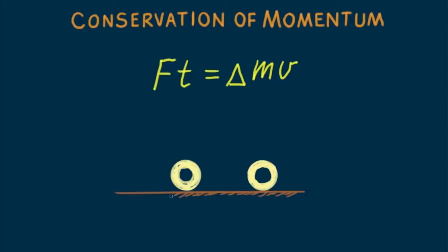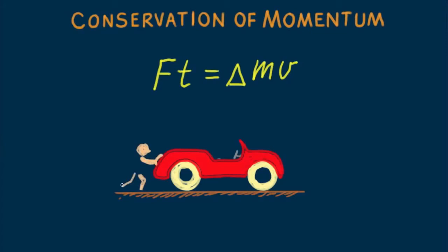If you sit in an automobile and push on the dashboard, the dashboard pushes back on you. There is no net impulse and no change in net momentum — internal impulses always cancel. To make the auto gain momentum, you'd have to get outside and push from outside. Only an external impulse changes momentum.